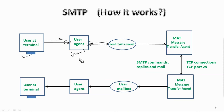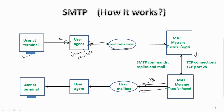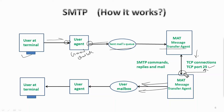MTA means Message Transfer Agent. From the MTA client, the email is sent to the MTA server, which then sends the mail across the connection. The SMTP server is always in listening mode, and as soon as it detects a TCP connection from any client, the SMTP process initiates a connection through port number 25. After successfully establishing a TCP connection, the client process sends the mail instantly.